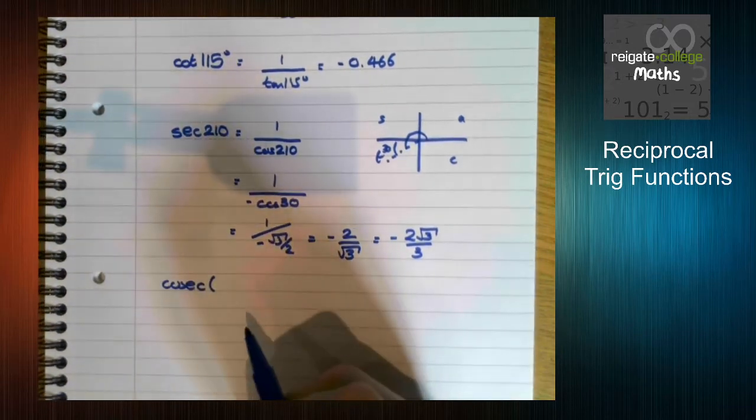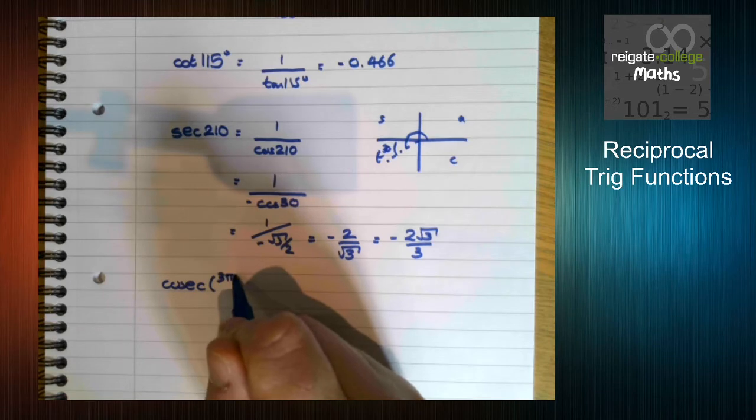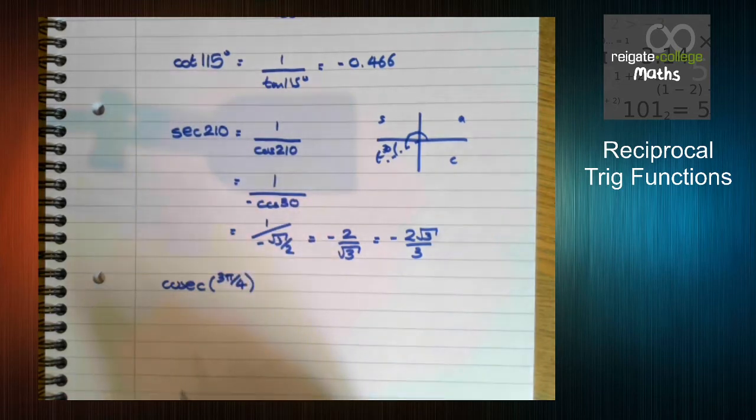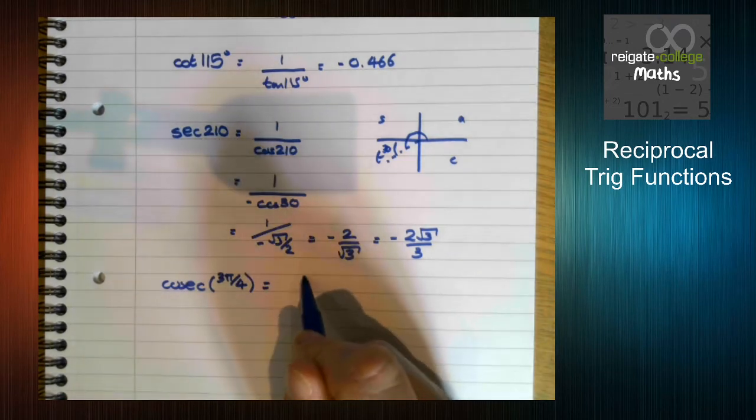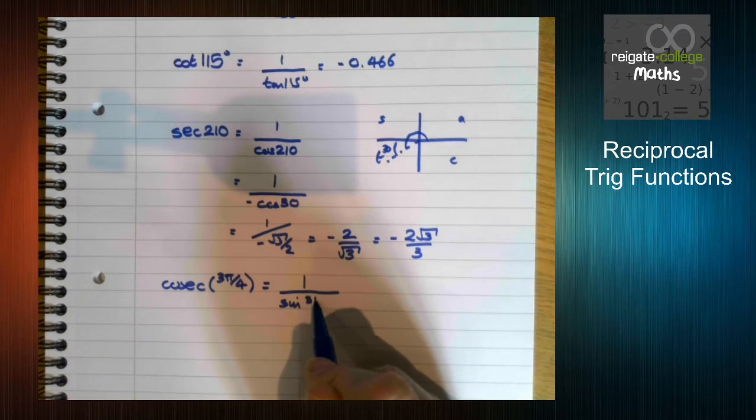As I said, these work in degrees and in radians, so let's do it with cosec 3π over 4. Again, we know that's 1 over sin 3π by 4.